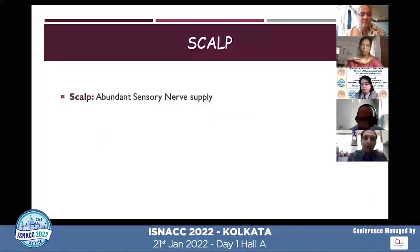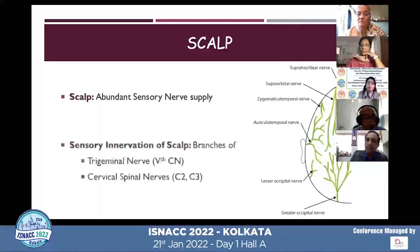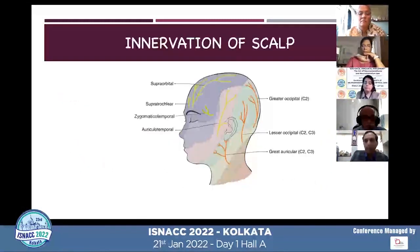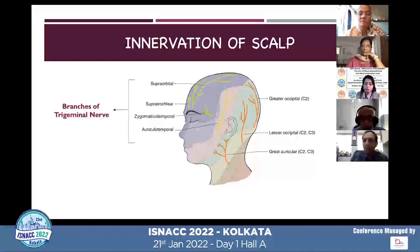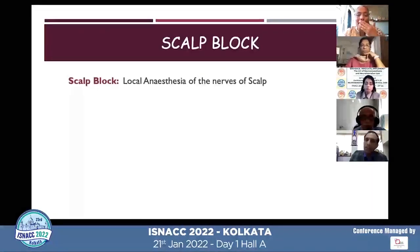The scalp has an abundant nerve supply with almost six to seven nerves on each side. These are branches from the trigeminal nerve and cervical spinal nerves. The entire scalp is supplied by the supraorbital, supratrochlear, zygomaticotemporal, and auriculotemporal nerves anteriorly — all branches of the trigeminal nerve — and posteriorly by the greater occipital, lesser occipital, and great auricular nerves, which are branches of the dorsal rami of the cervical spinal nerves.